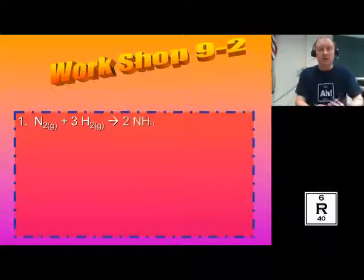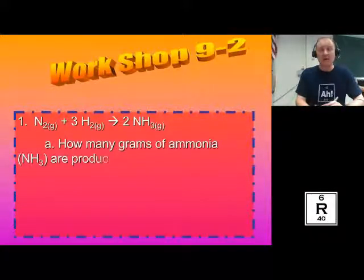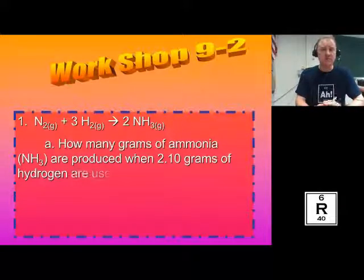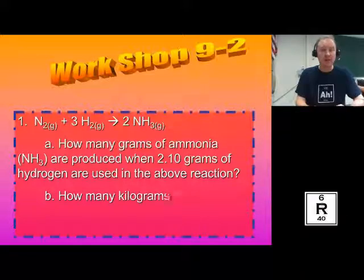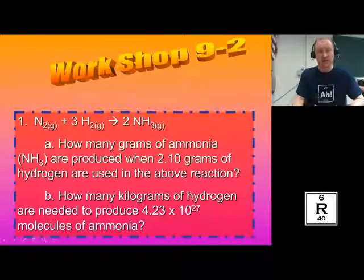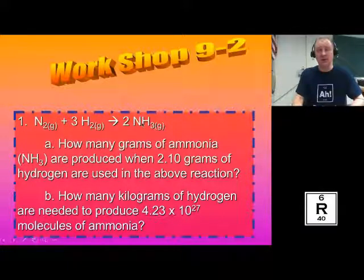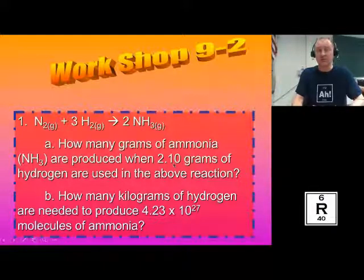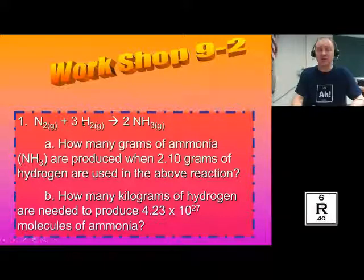For the workshop, problem 1A is just like what I modeled. It uses different compounds and values but the same process. We have 2.1 grams of hydrogen, and the question is how many grams of ammonia will be produced if the hydrogen reacted completely. The roadmap: take 2.1 grams of hydrogen, convert to moles of hydrogen, convert moles of hydrogen into moles of ammonia using the balanced equation, and then convert moles of ammonia into grams of ammonia.